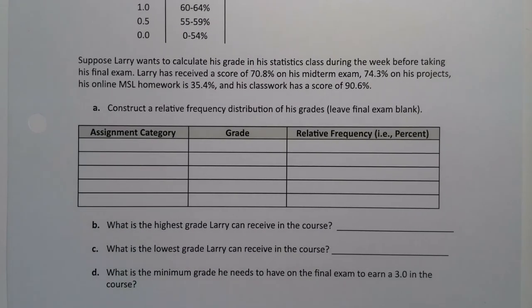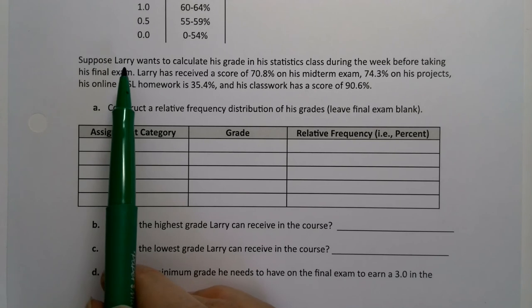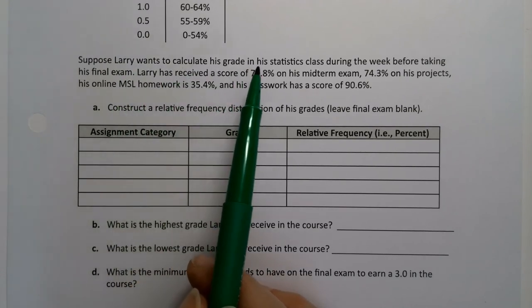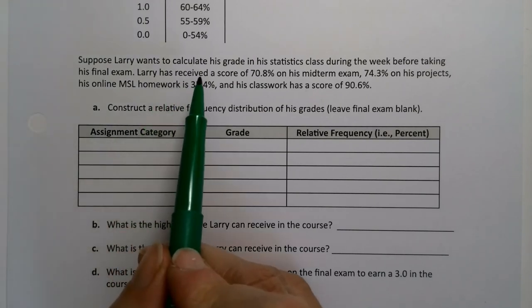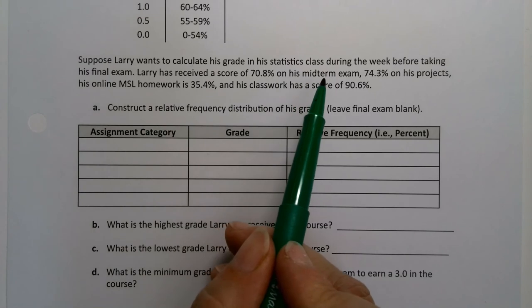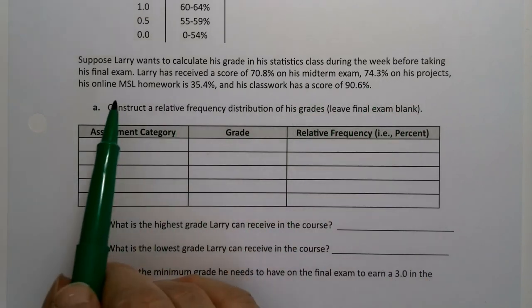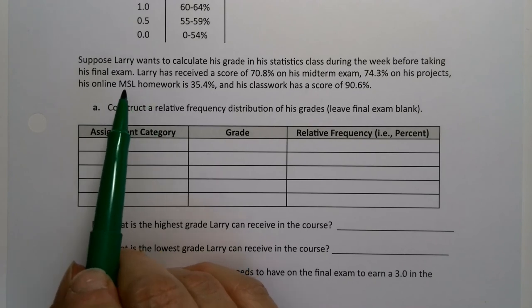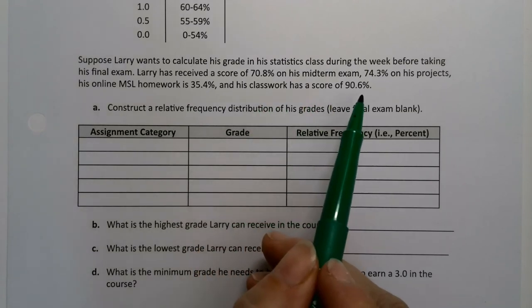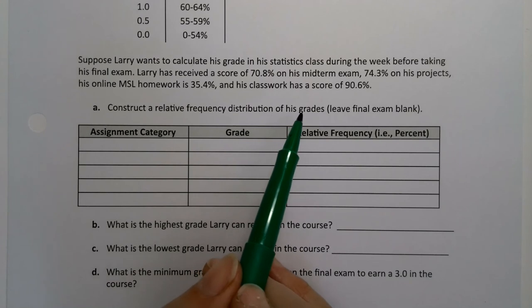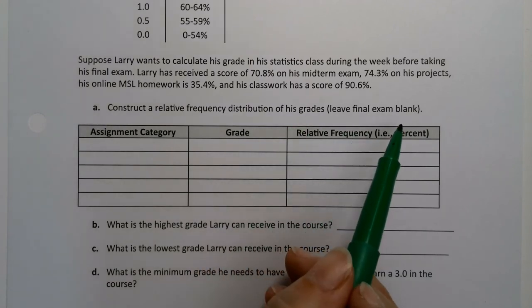The other reason for learning this is because I always get these questions in the last week of the class, which is, what do I need to get on the final? Larry wants to calculate his grade in his statistics class during the week before taking his final exam. You might find yourself in that boat, the week before the final. Larry has received a score of 70.8% on his midterm exam, 74.3% on his projects. His online MyStatLab homework is 35.4%, and his classwork has a score of 90.6%.